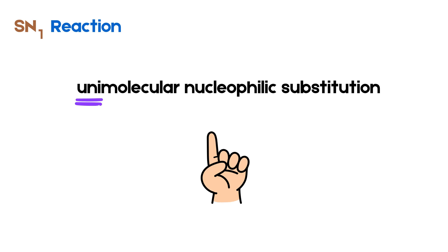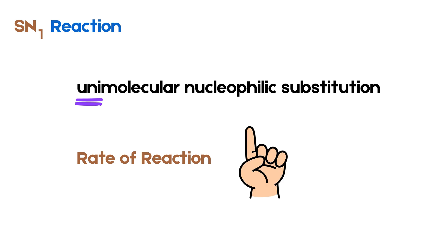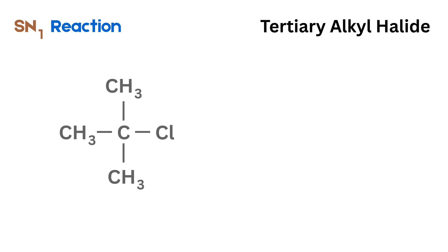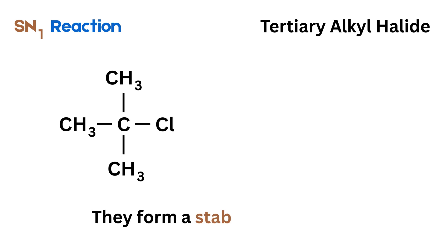The SN1 reaction is a unimolecular nucleophilic substitution reaction, where uni means one. That means the rate of reaction depends only on one molecule, usually the alkyl halide. This type of reaction is most favored by tertiary alkyl halides because they form a stable carbocation. By the way, a carbocation is a positively charged ion with a carbon atom that has only three bonds, giving it a total of six valence electrons instead of the usual eight.